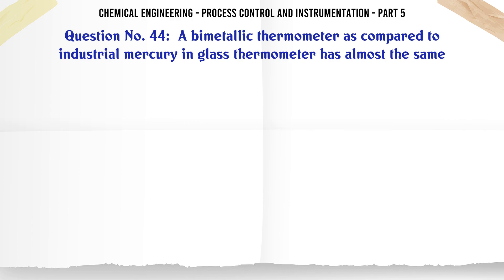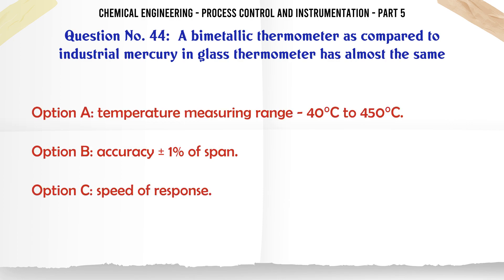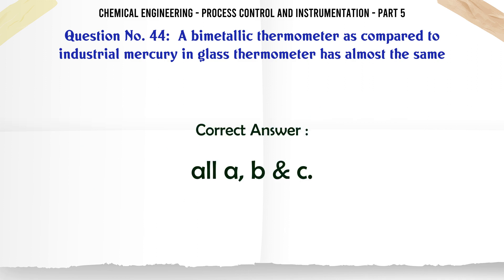A bimetallic thermometer as compared to industrial mercury in glass thermometer has almost the same: A. Temperature measuring range -40°C to 450°C. B. Accuracy ±1% of span. C. Speed of response. D. All A, B, and C. The correct answer is Speed of response.